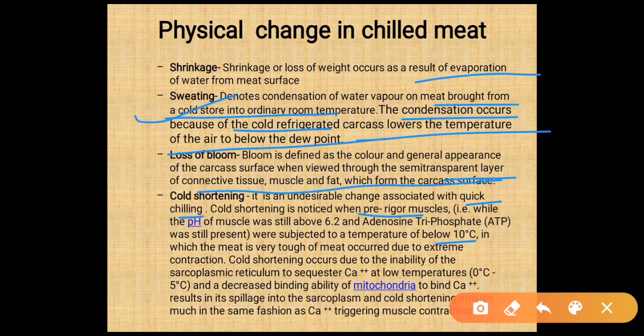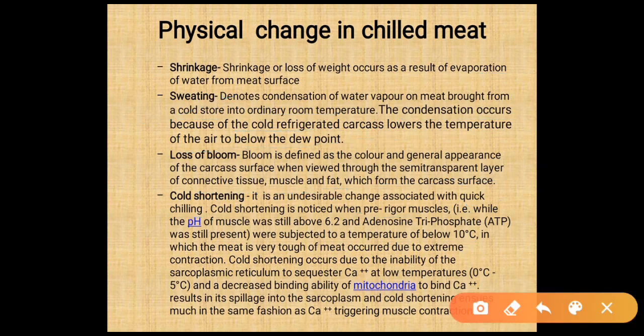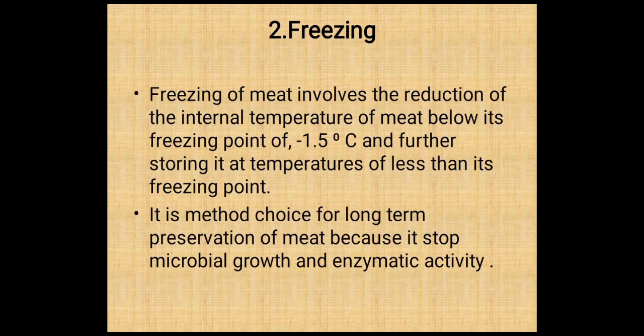Cold shortening occurs due to extreme contraction and the inability of the sarcoplasmic reticulum to sequestrate calcium at lower temperatures (0 to 5 degrees Celsius), decreasing the binding of mitochondria to calcium. This results in spillage into the sarcoplasm, triggering muscle contraction in the same fashion as calcium triggering.